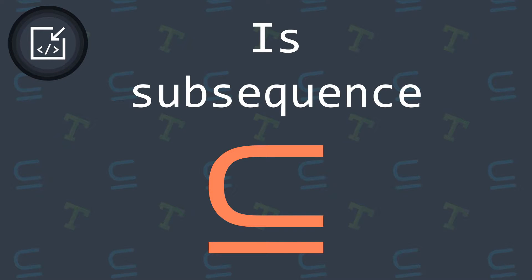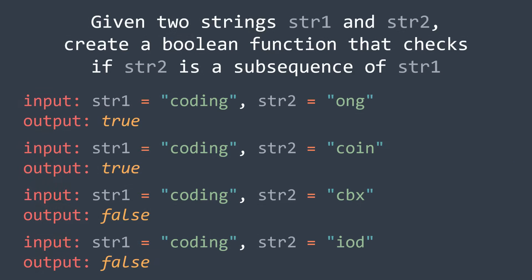Welcome to this new Inside Code video where we will see a new coding problem: the is subsequence problem. This problem says, given two strings str1 and str2, create a boolean function that checks if str2 is a subsequence of str1. You have 4 examples below, so pause the video and try to solve the problem before watching the solution.